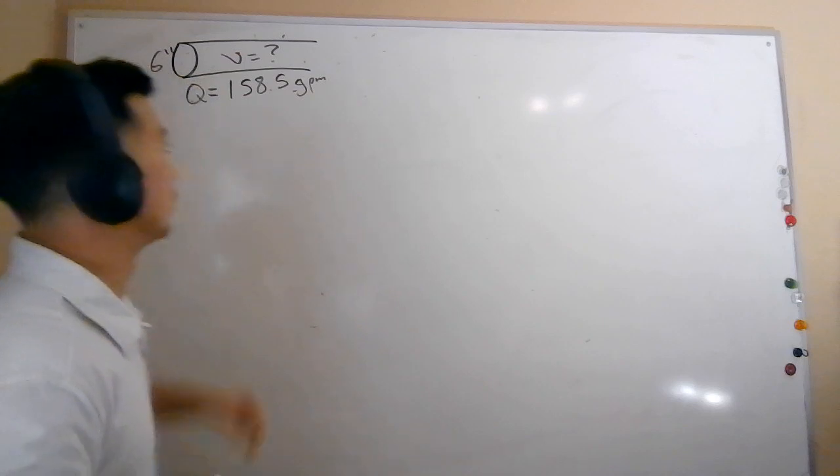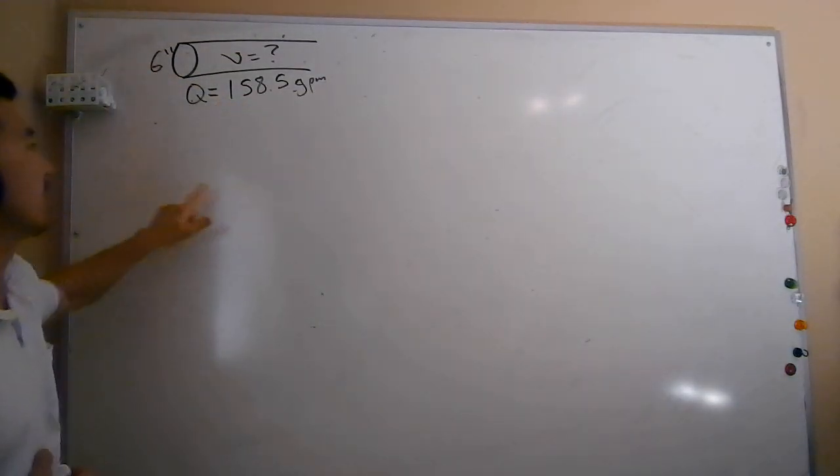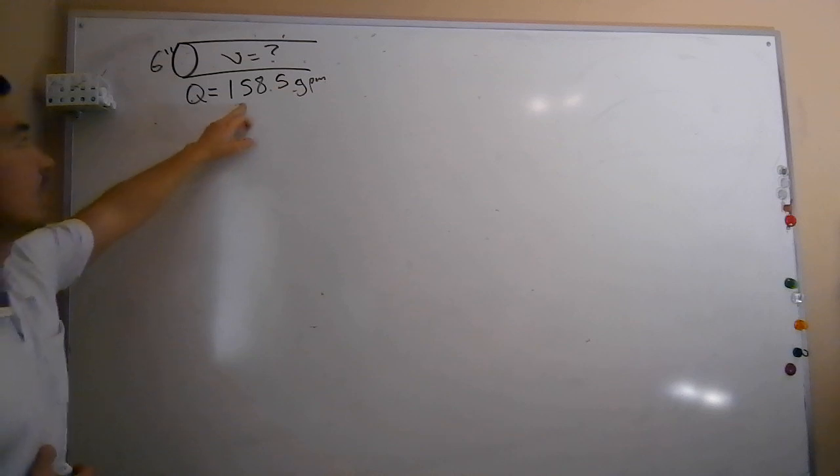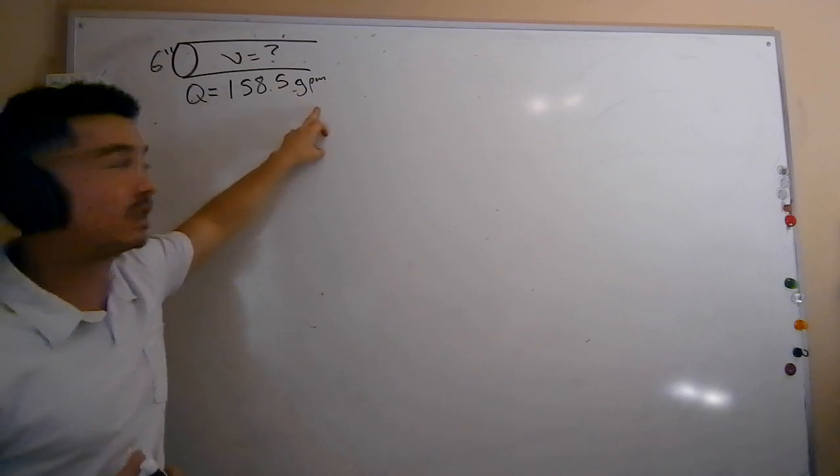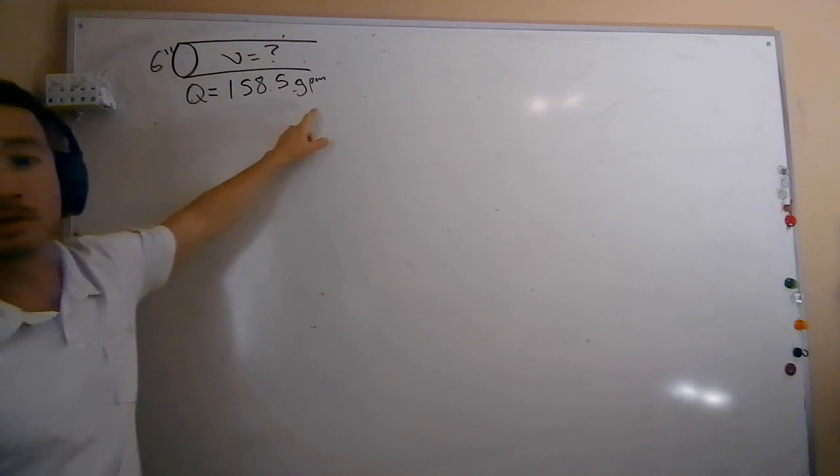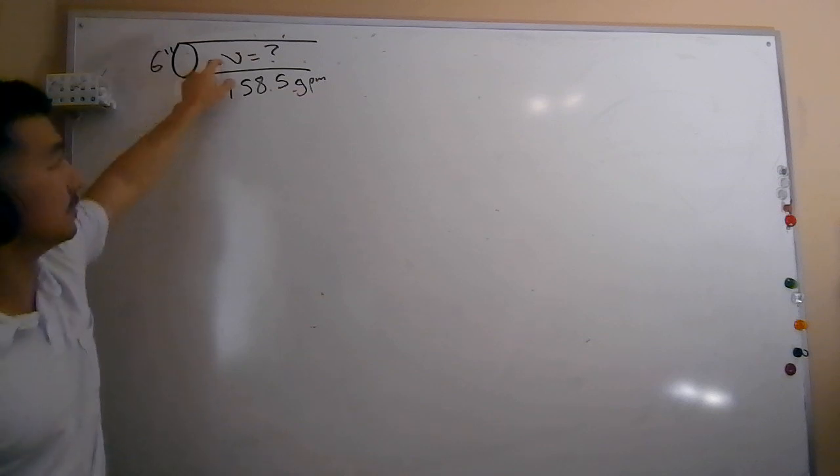So in this example here, we're given a flow rate, whether we're measuring it instantaneously or we're taking an average rate, we've got a flow rate of 158.5 GPM. Remember, what does GPM stand for? Gallons per minute. We've got a pipe here, it's a six-inch diameter pipe, and what we don't know is the velocity.